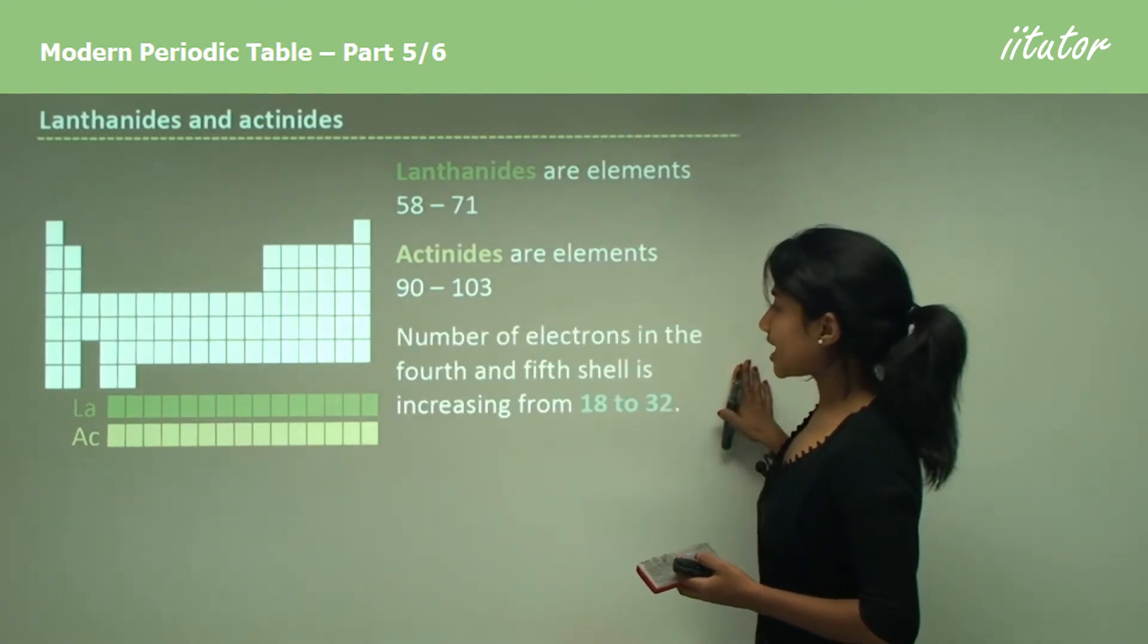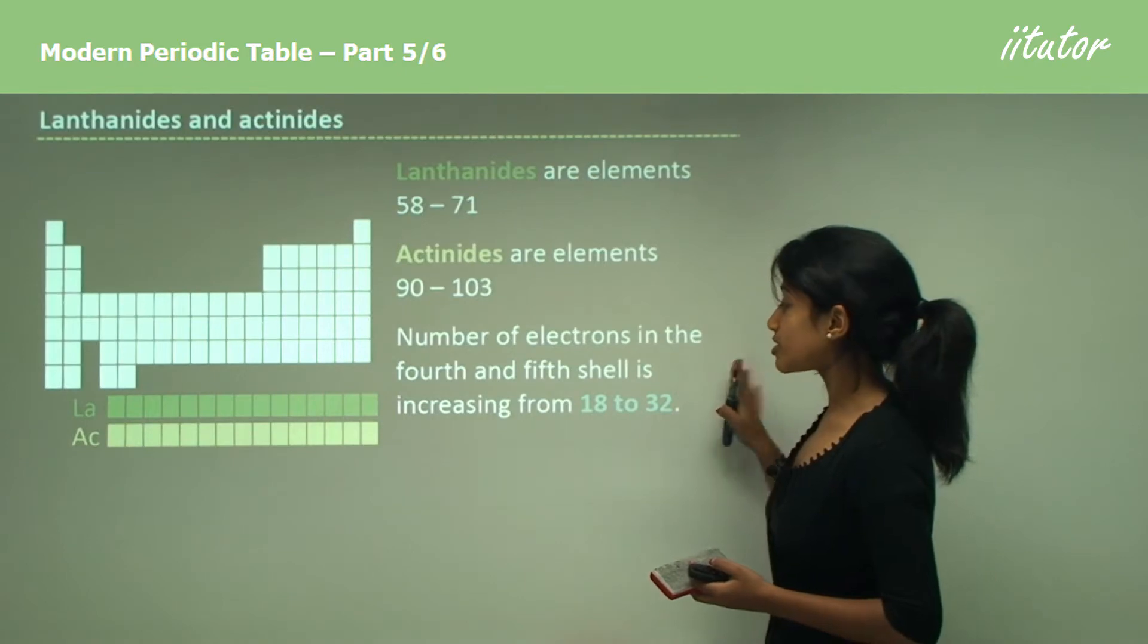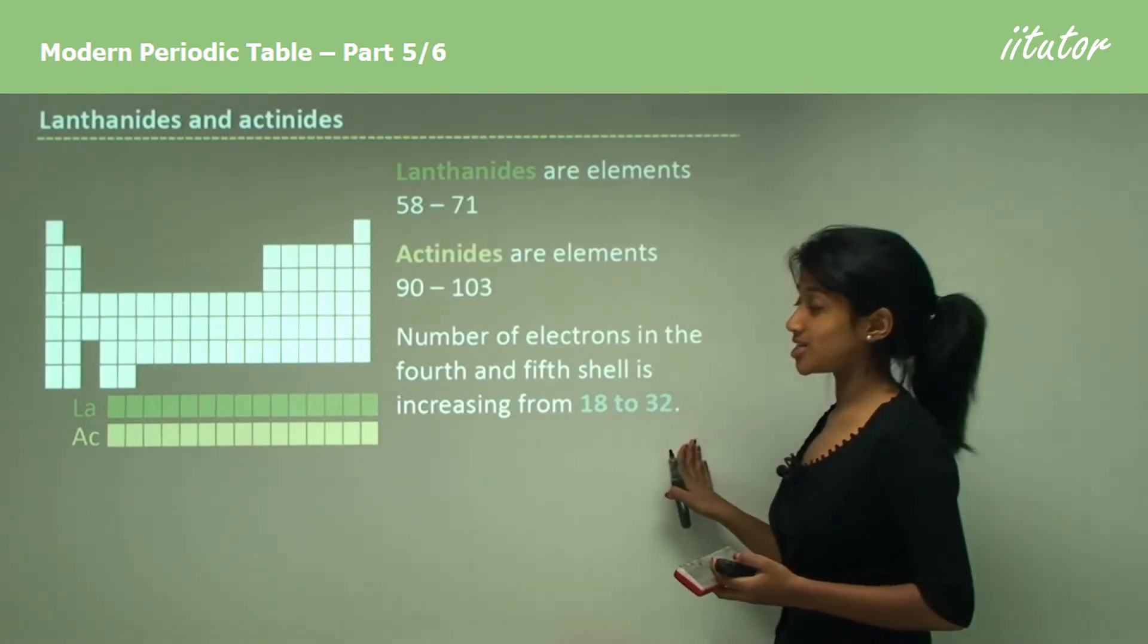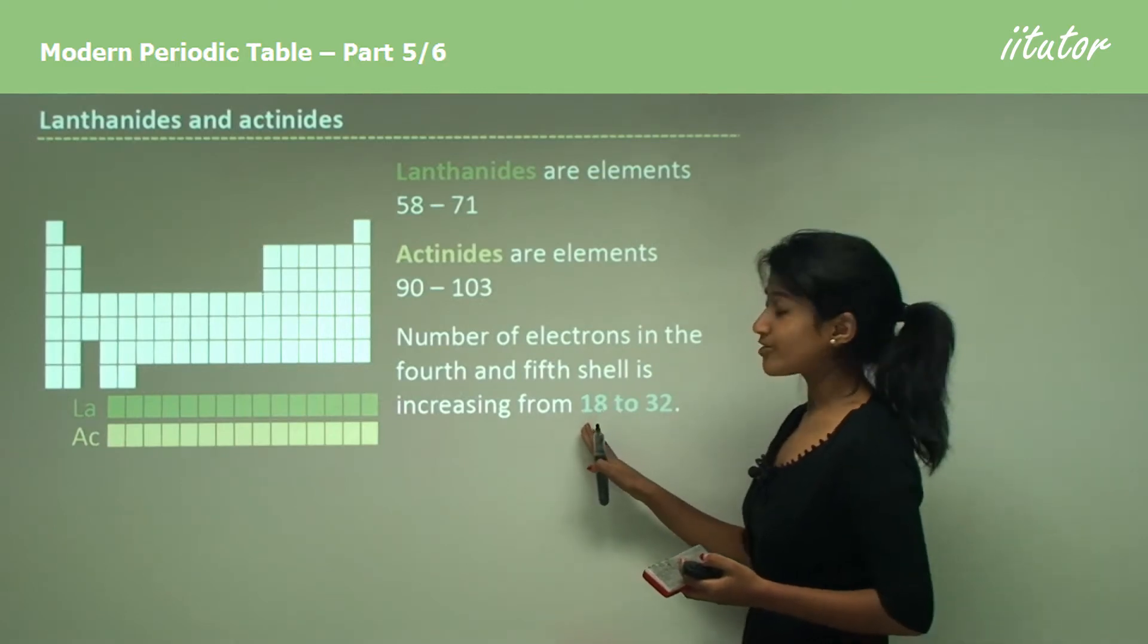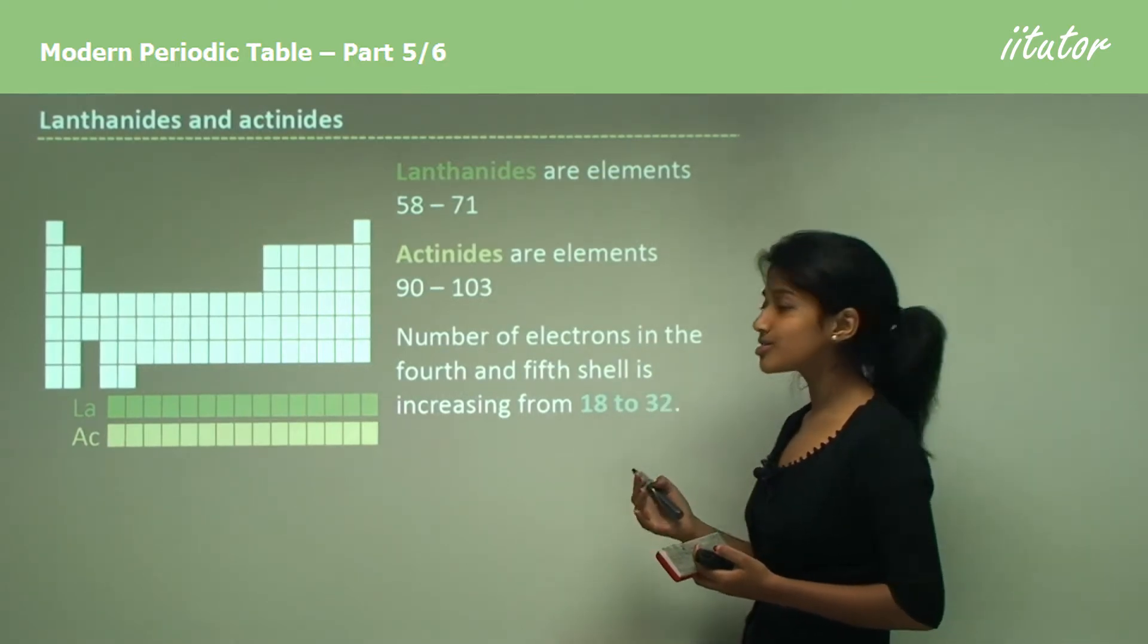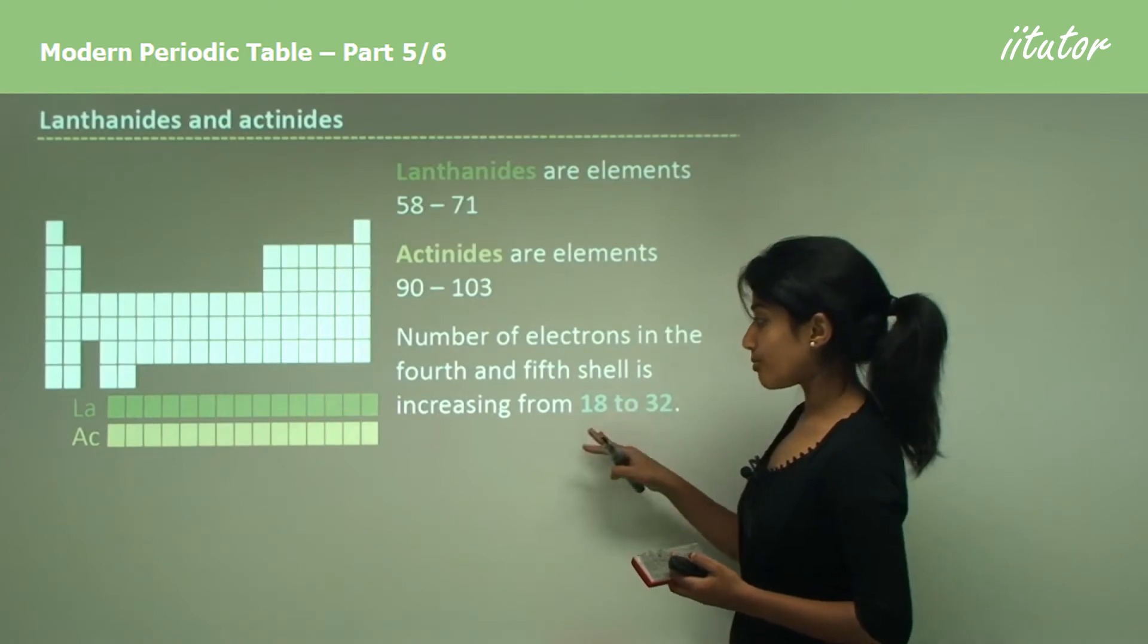And the number of electrons in the fourth and the fifth shell increased from 18 to 32. So there's a definite exception in these. It increases from 18 to 32, that's quite a lot. That's doubling its value almost.